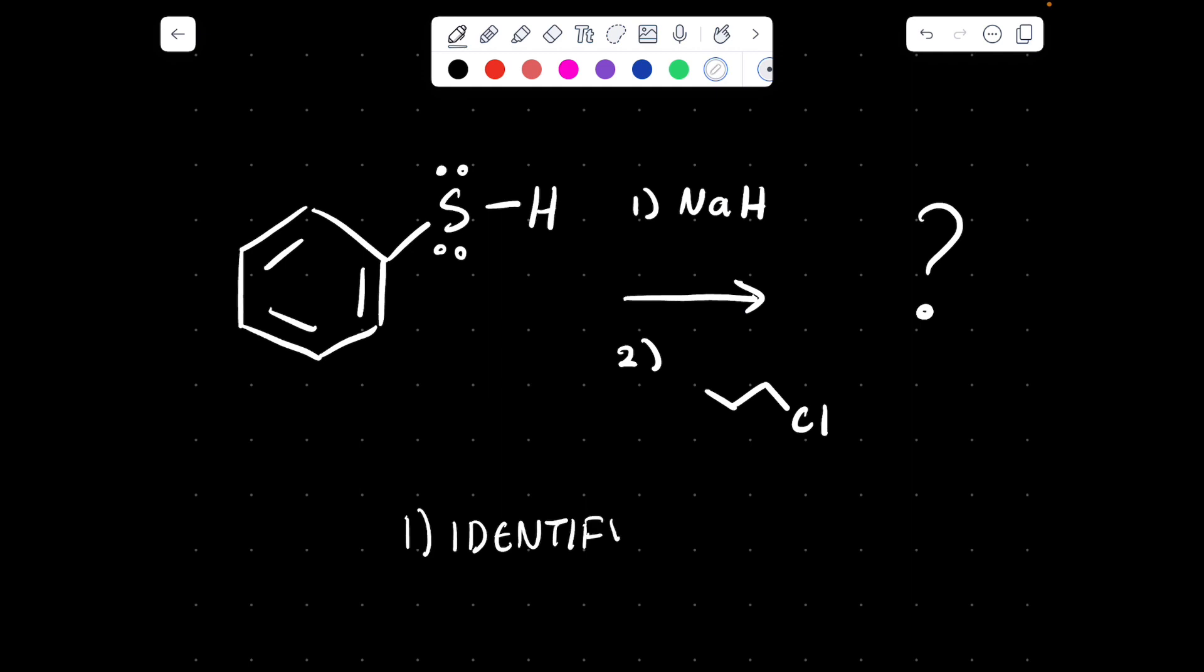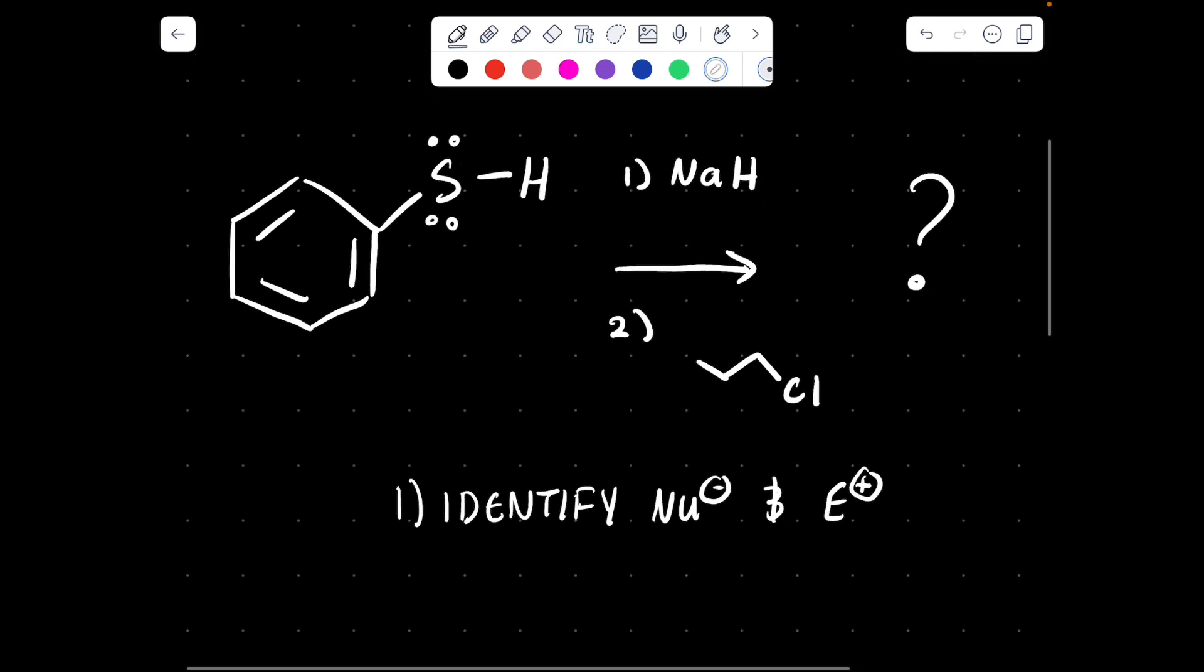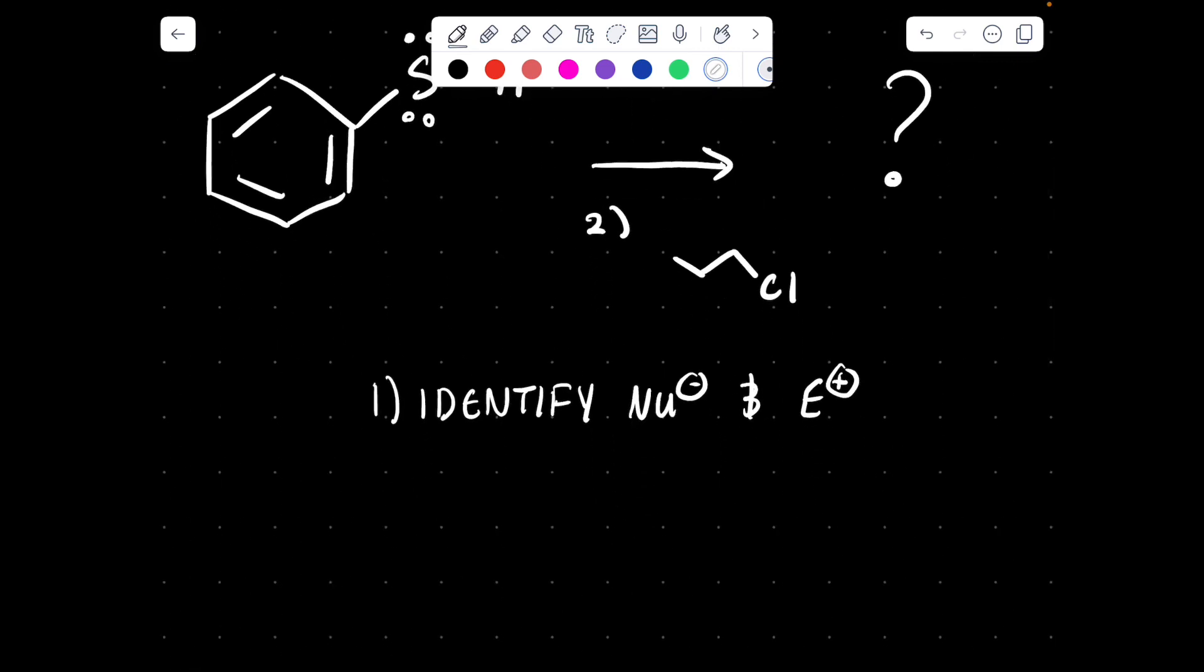Identify the nucleophile and the electrophile. Okay, well then we can say, what's the nucleophile? This is the thing with the electrons. So, something with, for example, a lone pair or a pi bond.